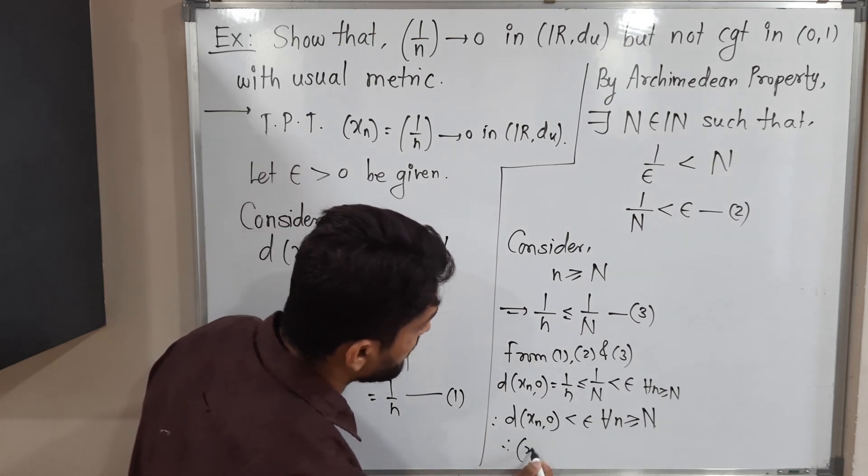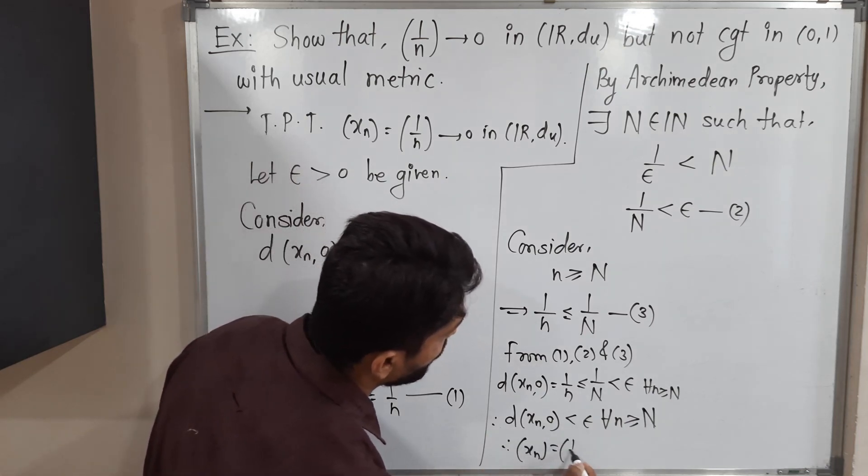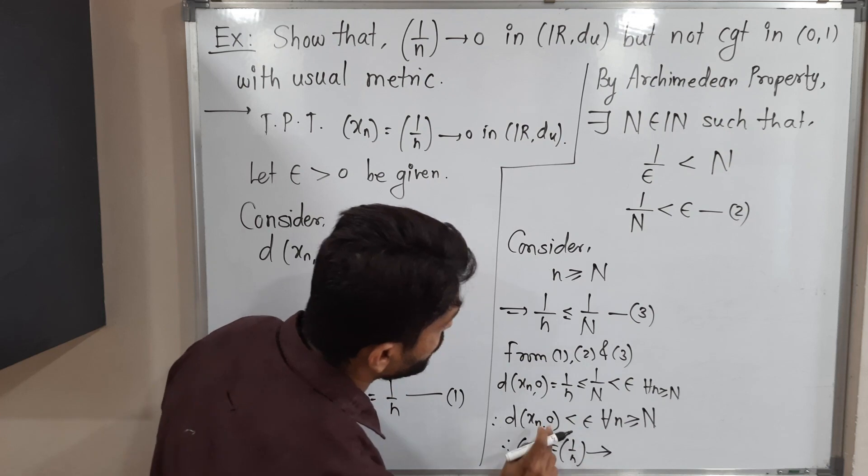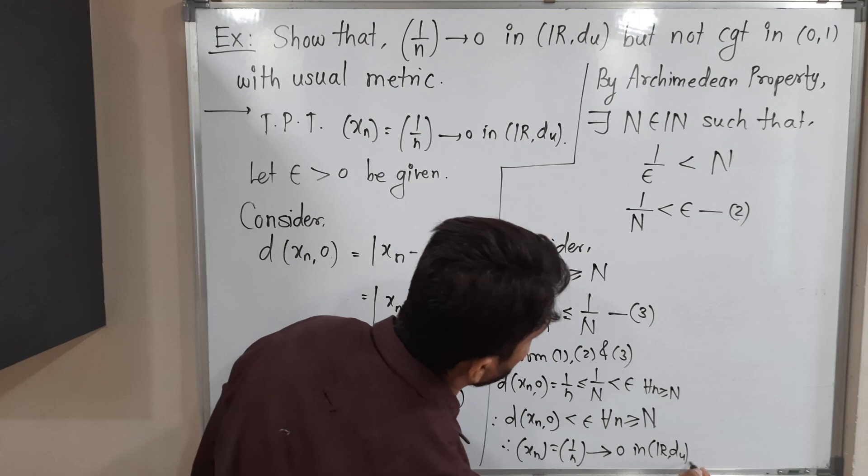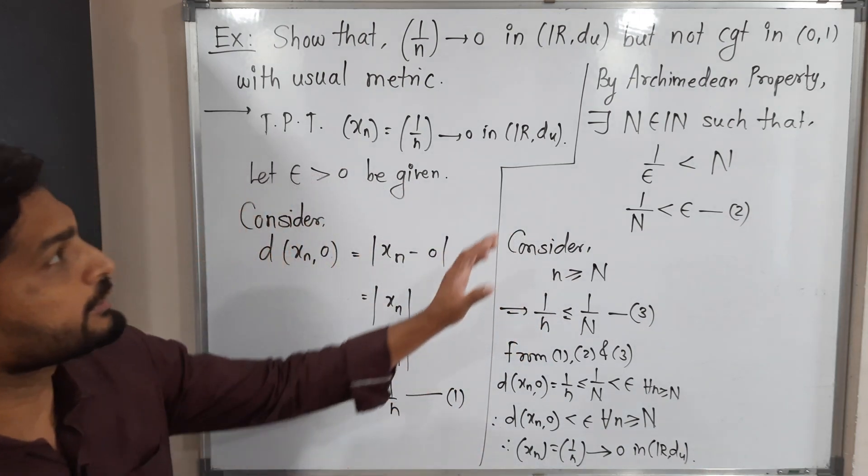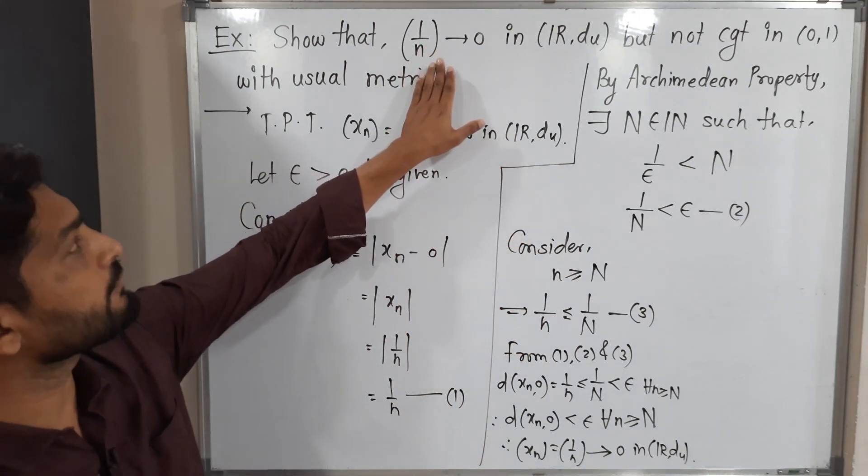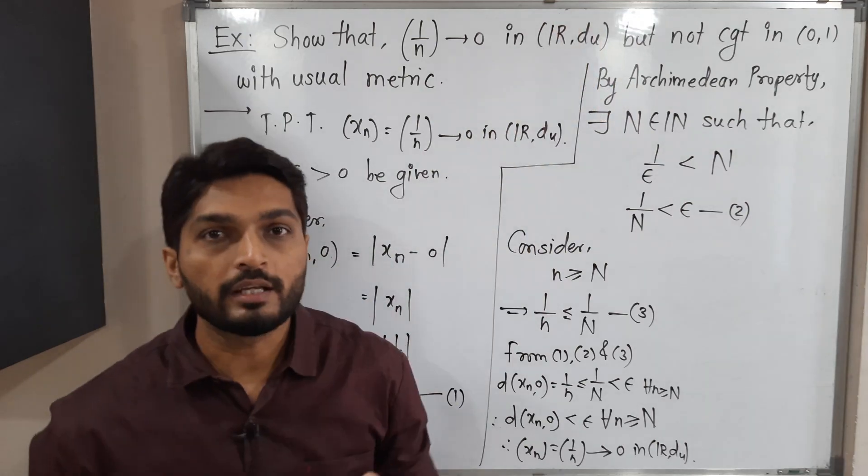So therefore we can say that sequence x_n which is nothing but 1 by n converges to 0 in R with usual distance D_u. So the first part is done. We proved the sequence 1 by n converges to 0 in R with usual metric.